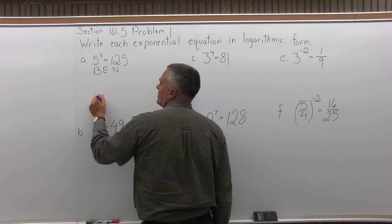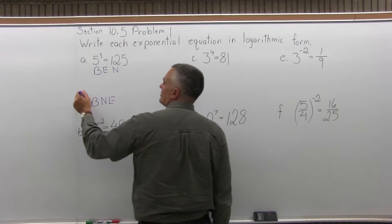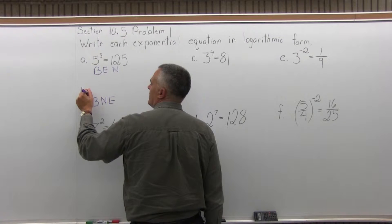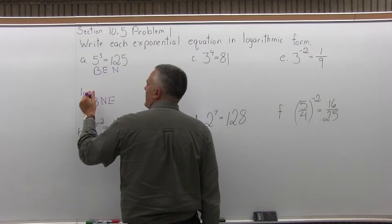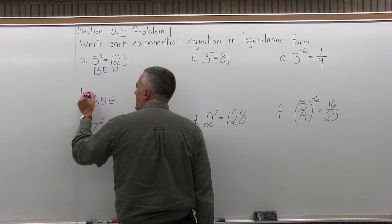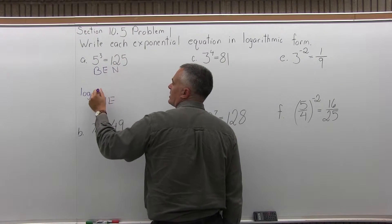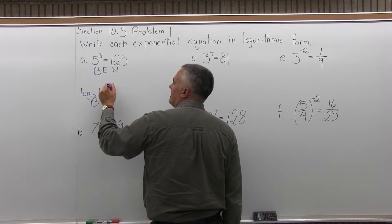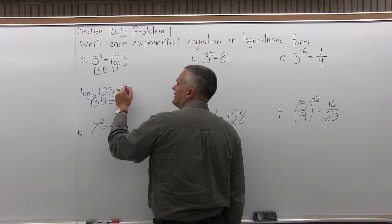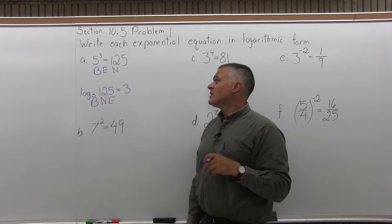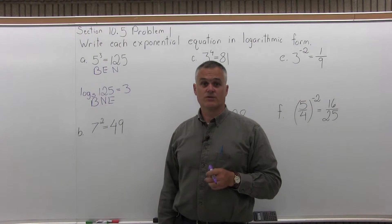Underneath that I write BNE — base, number, exponent — for the log form. We start by writing the word log, then the base is written as a subscript, so the base is 5, giving log base 5. Then the number comes next, which is 125. Then we write equals and put the exponent, which is 3. So 5 to the third power equals 125 can also be written as log base 5 of 125 equals 3. They're equivalent.